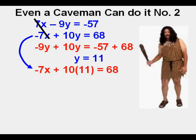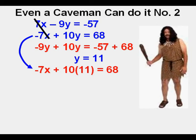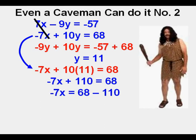Now that he knows what y is, he can bring down one of the equations and substitute 11 for y. So he brings down negative 7x plus 10y equals 68, replacing y with 11. So he has negative 7x plus 10 times 11 equals 68. Simplifying, we have negative 7x plus 110 equals 68. He moves the 110 to the right, and that makes it negative 110 on the right side. Simplifying, he has negative 7x equals negative 42. Dividing both sides by negative 7, he finds that x equals 6.